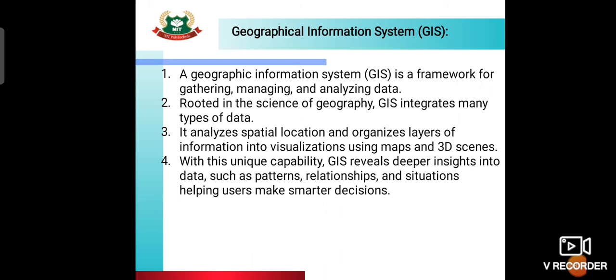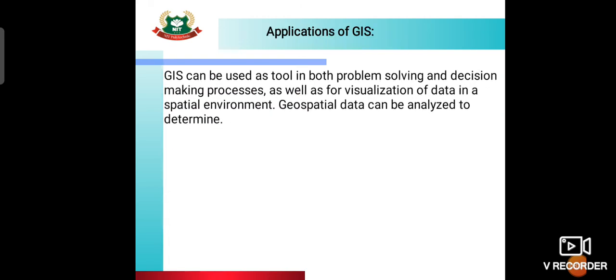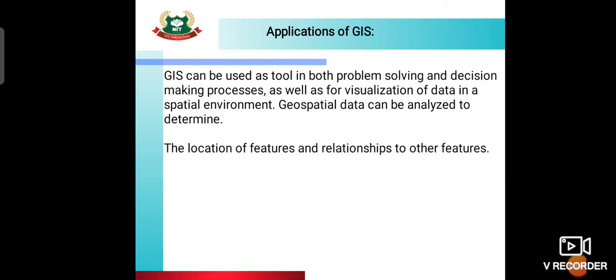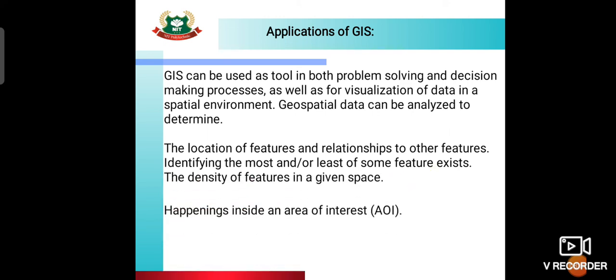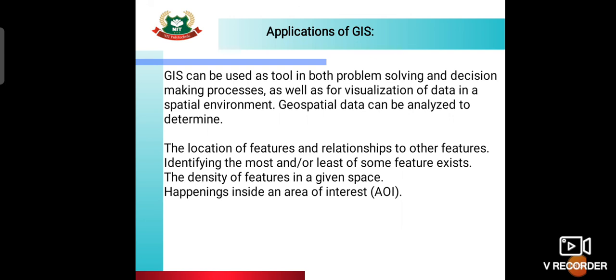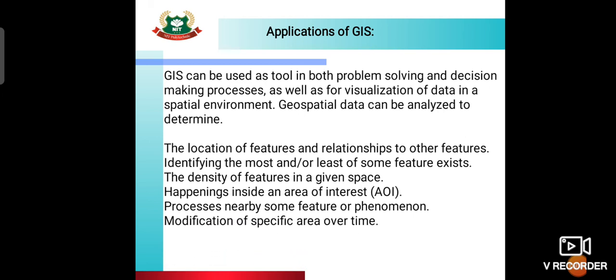Patterns like hills, lakes, and terrain features can all be captured using GIS. GIS can be used as a tool in both problem solving and decision making. Geospatial data can be analyzed to determine: the location of features and relationships to other features, identifying where most or least of some feature exists, the density of features in a given space, what is happening inside an area of interest, processes occurring near certain features or phenomena, and the modification of a specific area over time.